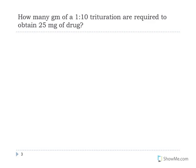In this first problem, we're being asked how many grams of a 1 to 10 trituration are needed to obtain 25 milligrams of drug. I find that the best way to solve these problems is to label my units carefully so that I don't get mixed up. So in this case, let's start with what we want. We want 25 milligrams, and I'm going to label it of drug, and our source is this trituration.